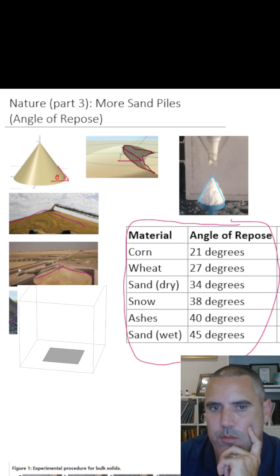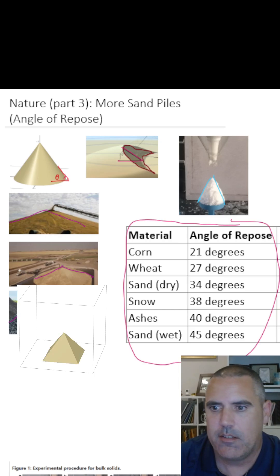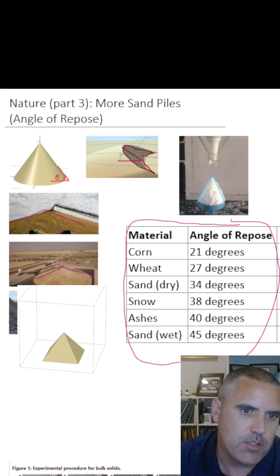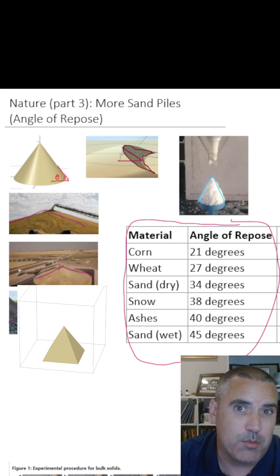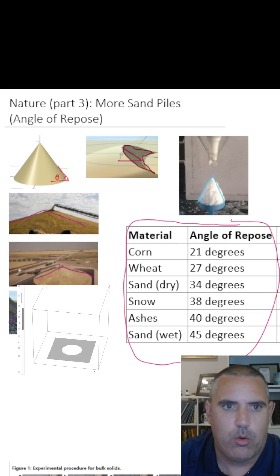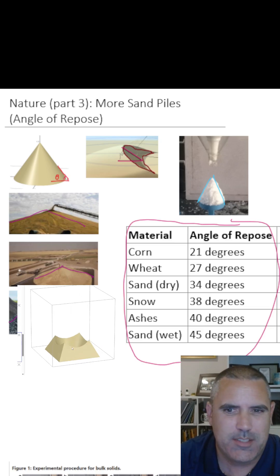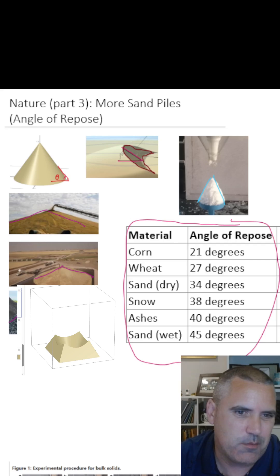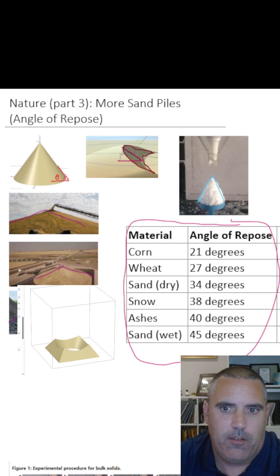What if you make the base a square and start to pile sand on it? You get this pyramid shape, and again I made it so I could change different things about it. Then what was interesting to me is: what happens if you put a hole in the middle and start piling sand on it? That's quite a bit more interesting — there are lots of fun little things. I didn't find the volume of that; I would encourage someone to try that out.